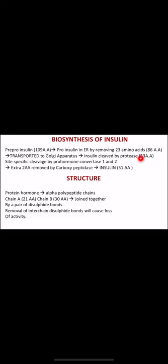The final insulin molecule contains 51 amino acids. It consists of two polypeptide chains: chain A with 21 amino acids and chain B with 30 amino acids, joined together by a pair of disulfide bonds.